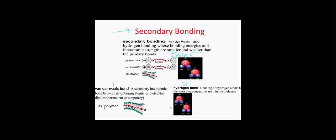In van der Waals bonding, we have a secondary interatomic bond between neighboring atomic or molecular dipoles, permanent or temporary. Van der Waals bonds are what cause the properties of polymers: low stiffness, low melting point, but high coefficient of thermal expansion. The 1D covalently bonded chains are held together by van der Waals bonding between the chains, and that is why van der Waals bonds are responsible for the properties of polymers. Visit that video for more in-depth coverage.